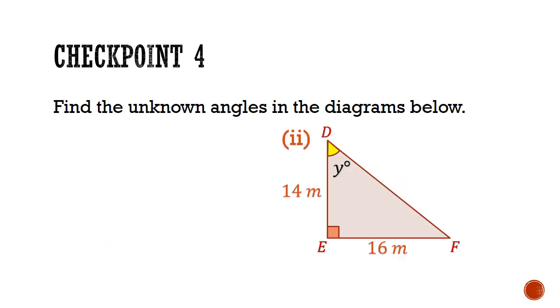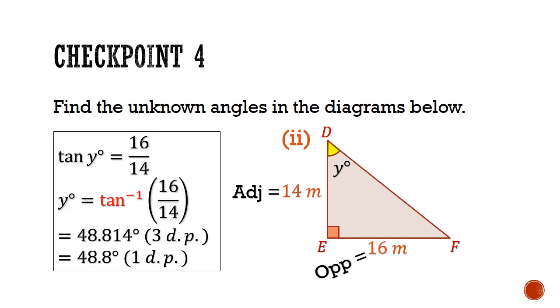In part 2, 14 meters is the adjacent side, and 16 meters is the opposite side. That leads us to use the tangent ratio. Tangent y is equal to 16 over 14. And we can take the inverse tangent function of 16 over 14 to undo the tangent. That gives us an angle of 48.8 degrees.